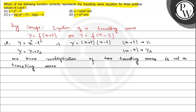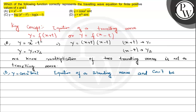But we know that the multiplication of two traveling waves is not a traveling wave. Therefore, option A is not a traveling wave. Moving to option B, y is equal to cos(x squared) sin(t). This is the equation of a standing wave and cannot be brought into the form of a traveling wave.